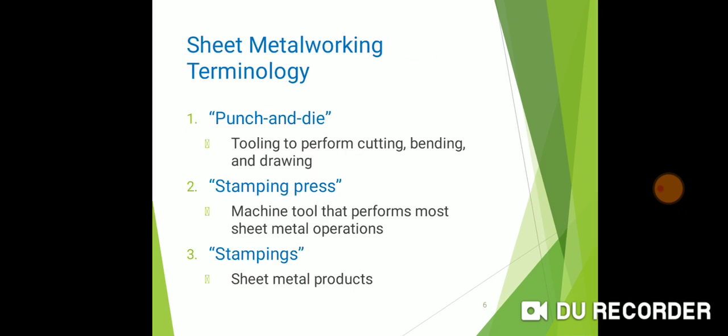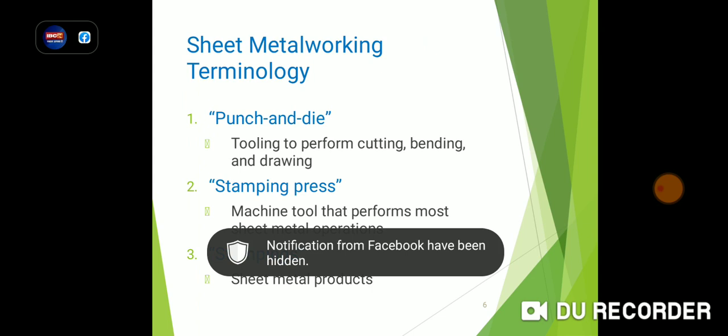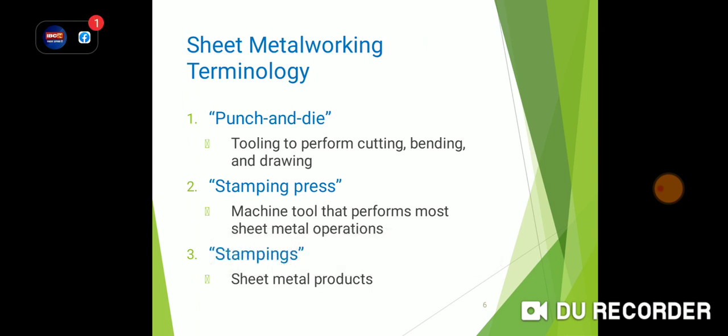Sheet metal working terminology includes punch and die, stamping press, and stampings. What is punch and die? Punch and die are cutting tools used inside the machine. Stamping press is a mechanical tool that performs most sheet metal operations. Stampings are the sheet metal products.